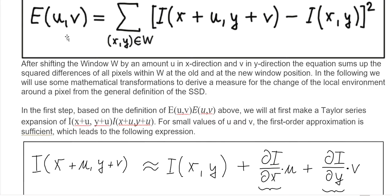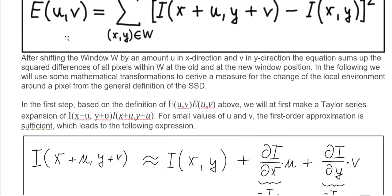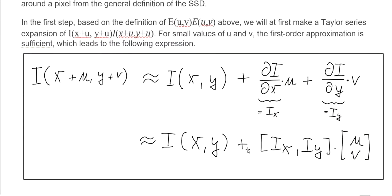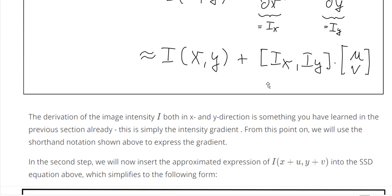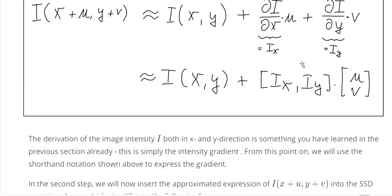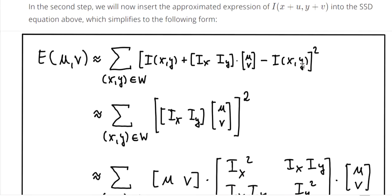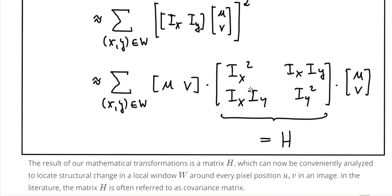We take the first-order Taylor series expansion. For small values U and V, the first-order approximation gives us a formula containing the gradient in X and the gradient in Y. The derivation of image intensity I in both X and Y directions is the intensity gradient, which you learned from the last video. In the second step, we insert the expression for I(x+u, y+v) into the equation, and we get the H matrix — called the covariance matrix.